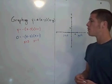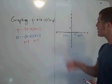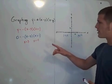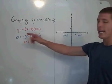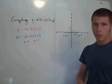So the next thing you want to do is plot your vertex. In this case, the vertex is going to be a maximum point. Since our a value is negative, our graph is going to open down, and our vertex is going to be a maximum point.